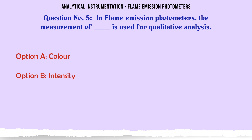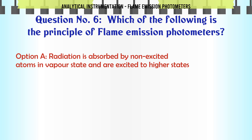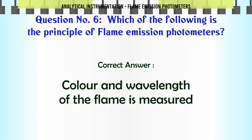In flame emission photometers, the measurement of which of the following is used for qualitative analysis? A. Color. B. Intensity. C. Velocity. D. Frequency. The correct answer is: Color. The color and wavelength of the flame is measured.